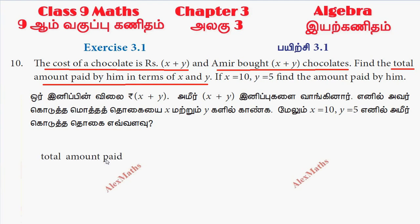Total amount paid equals cost of a chocolate into number of chocolates bought. Cost of a chocolate is (x+y), and Amir bought (x+y) chocolates. So number of chocolates bought is (x+y). Now we multiply.